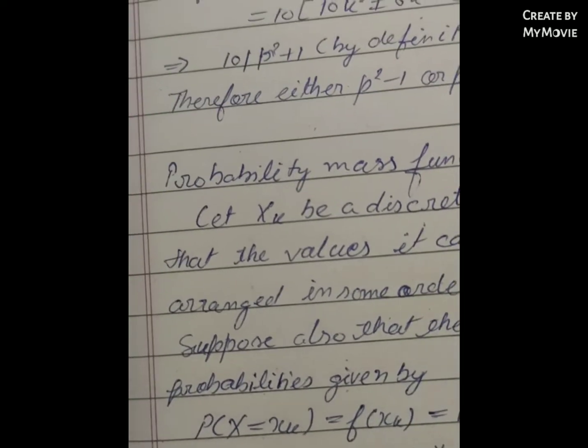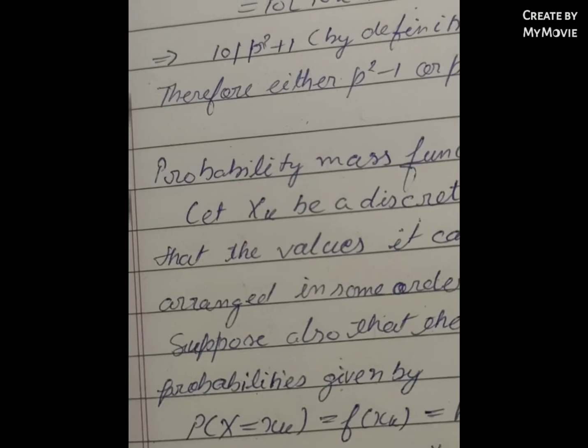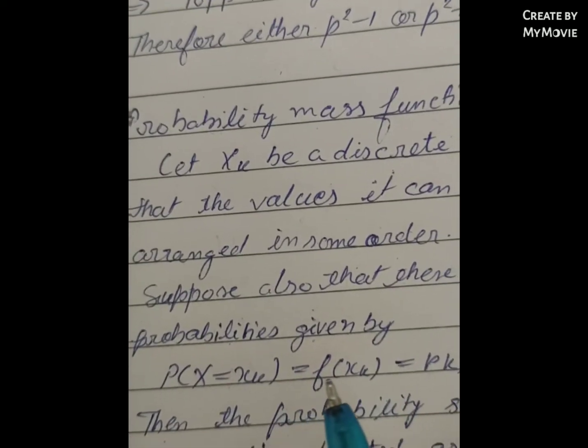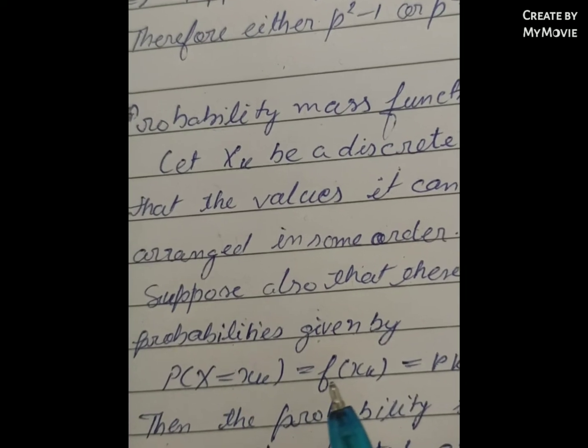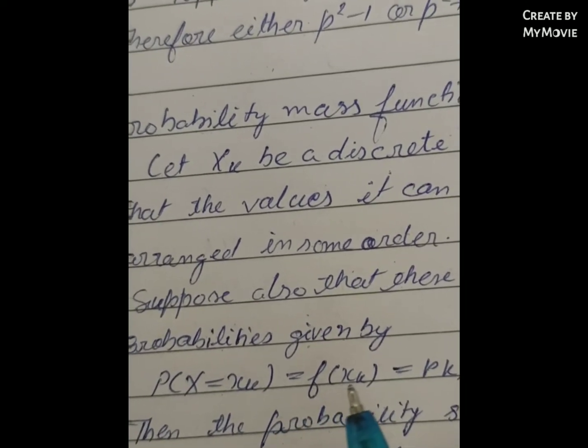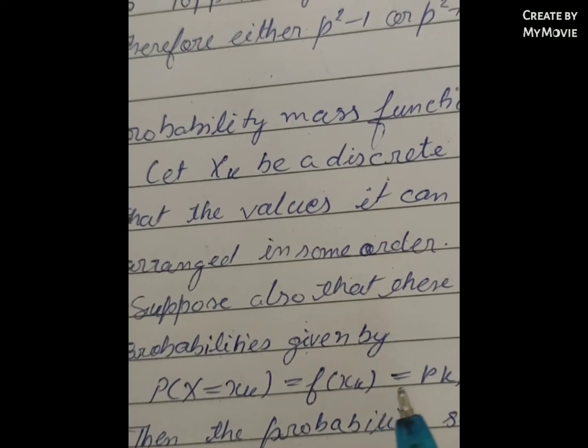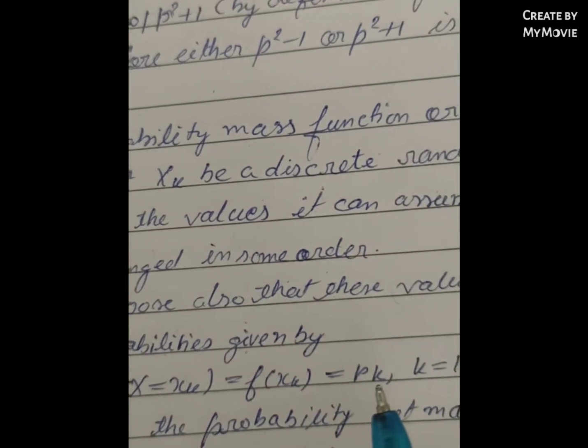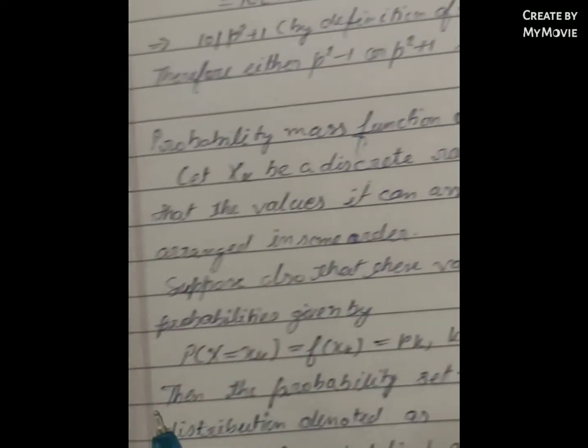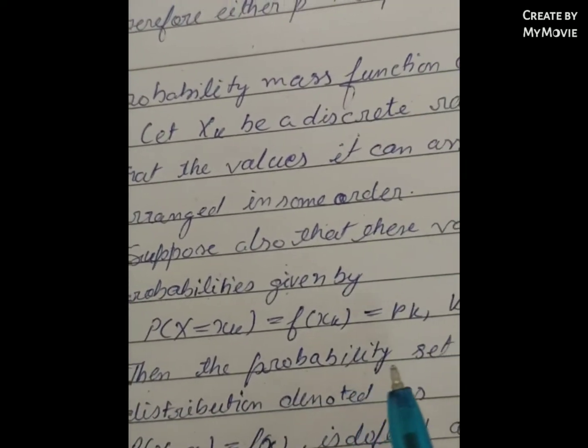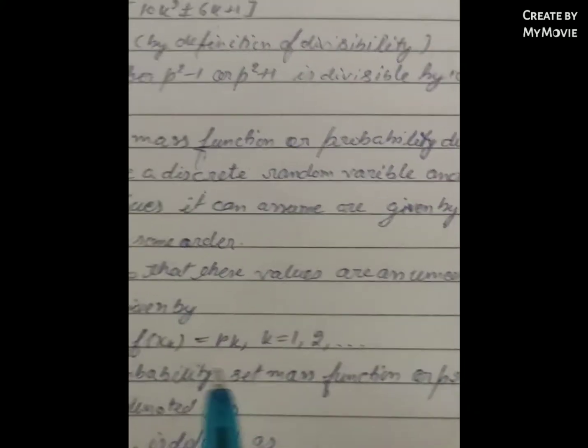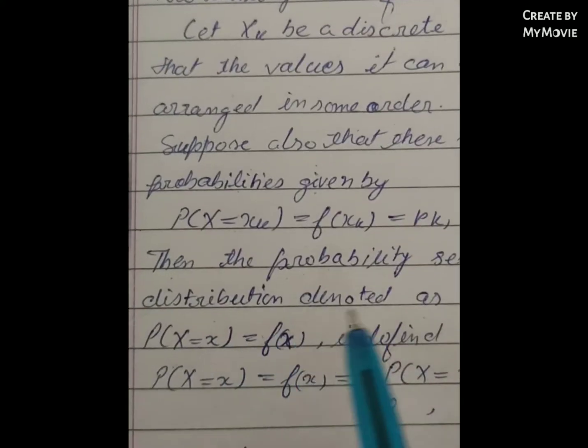This equals f(xk) equals pk, where k is 1, 2, and so on. Then the probability mass function of the probability distribution denoted as: